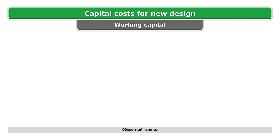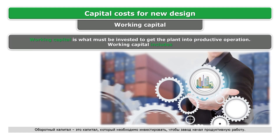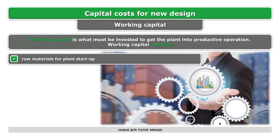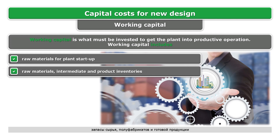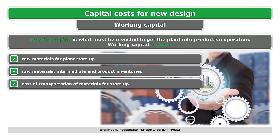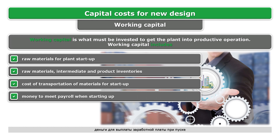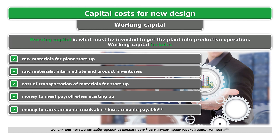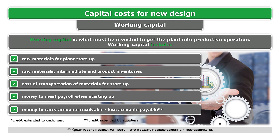Working capital is what must be invested to get the plant into productive operation. Working capital includes raw materials for plant startup, raw materials, intermediate and product inventories, cost of transportation of materials for startup, money to meet payroll when starting up, and money to carry accounts receivable less accounts payable. Accounts receivable is the credit extended to customers; accounts payable is the credit extended by suppliers.